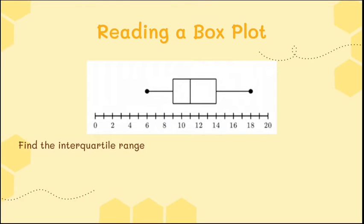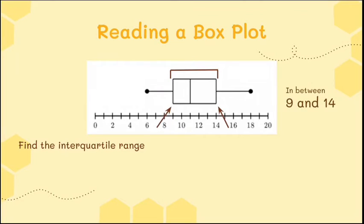Now I want to know the interquartile range. That's the range covered by the box — the region between 9 and 14. So we do 14 minus 9, which equals 5. The range between the box is 5 numbers.